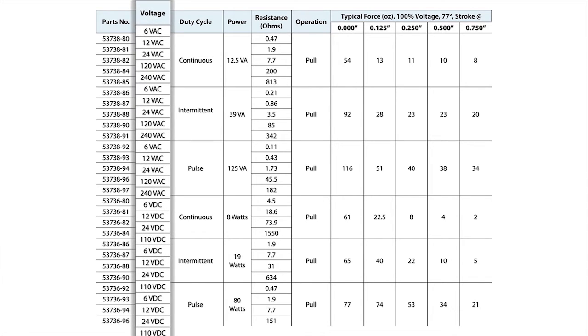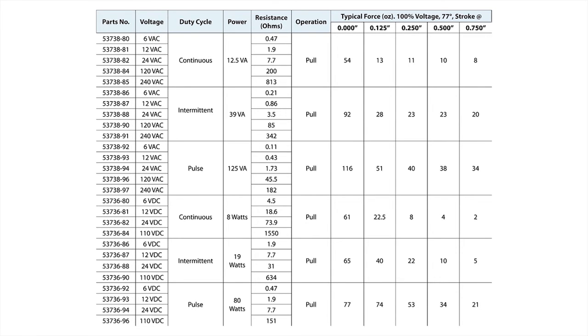Coil voltage ranges from 6 to 240 volts AC, and 6 to 110 volts DC, with a maximum stroke length of 0.8 and 1.